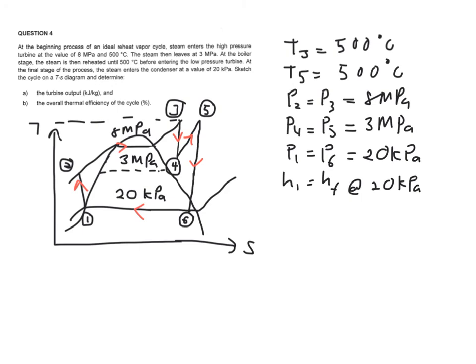So let's have a look at the real question over here. It asks you to find the turbine output which is you have two turbines over here. So A is actually you need to find the work of your turbine which includes high pressure turbine.